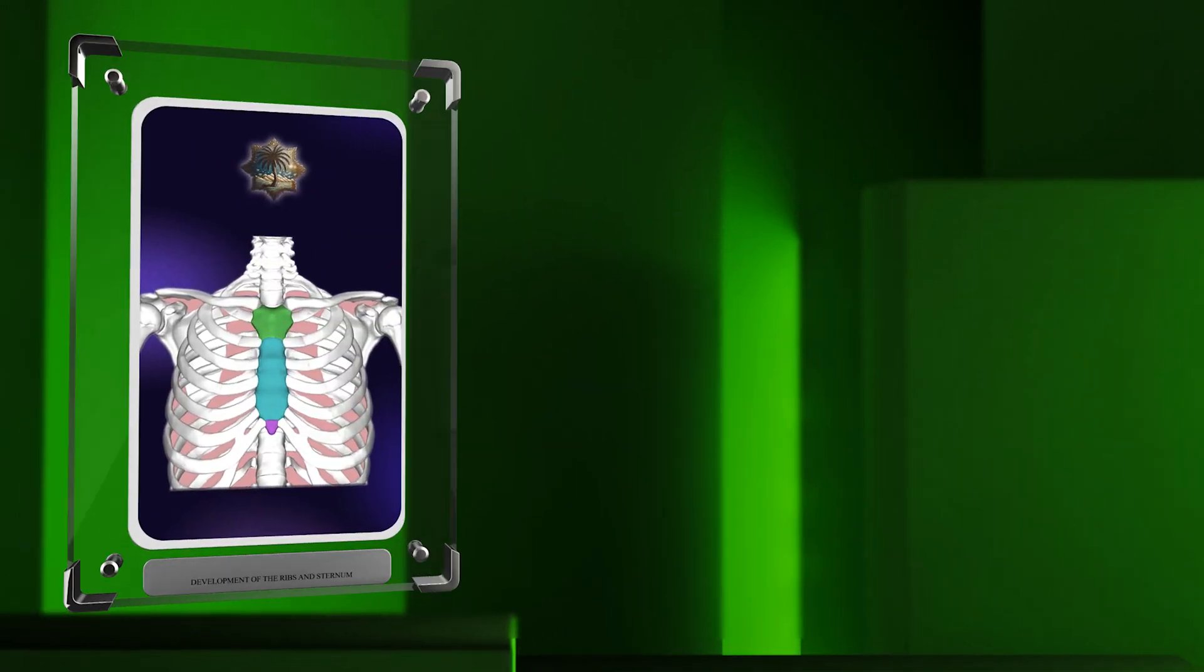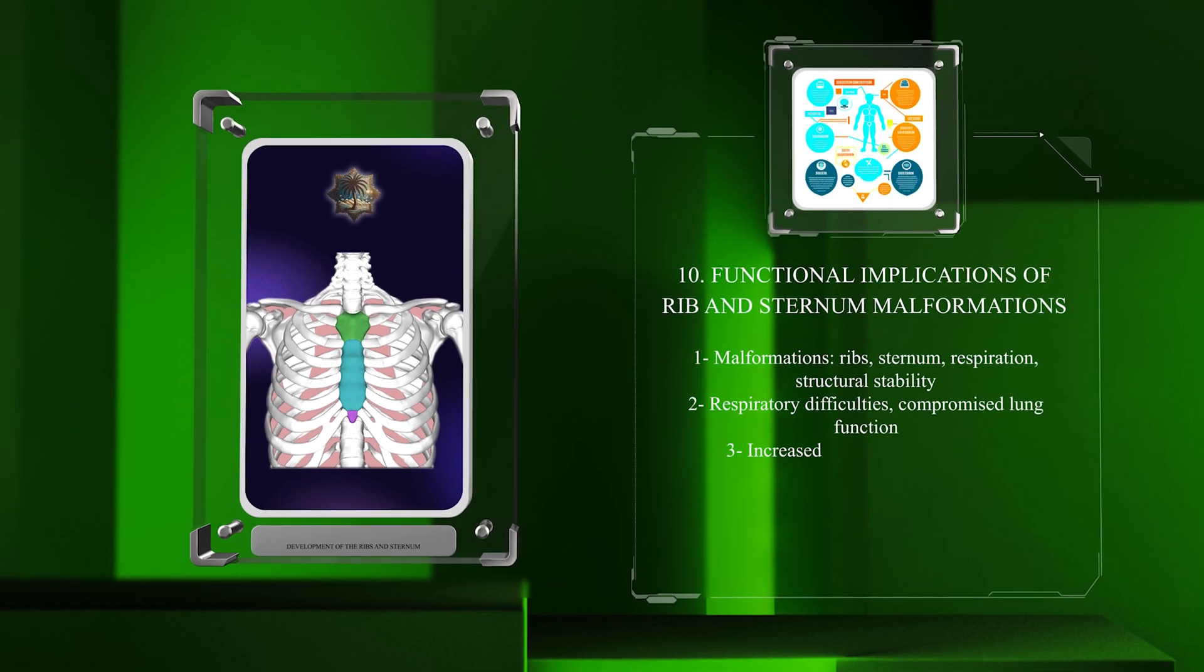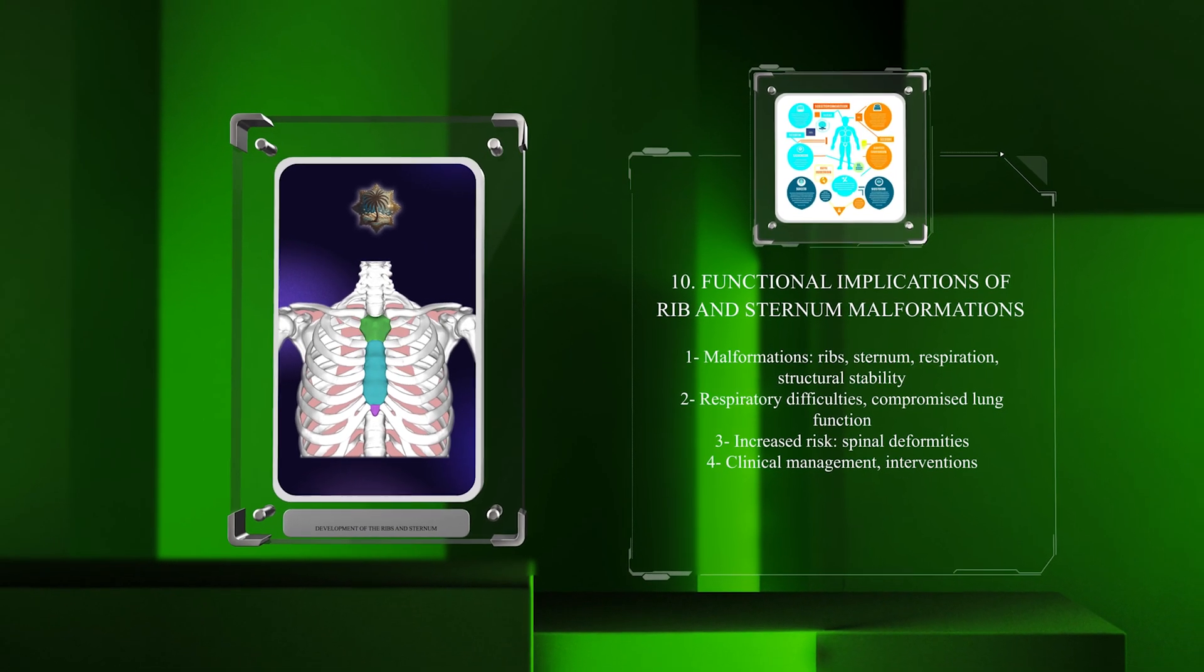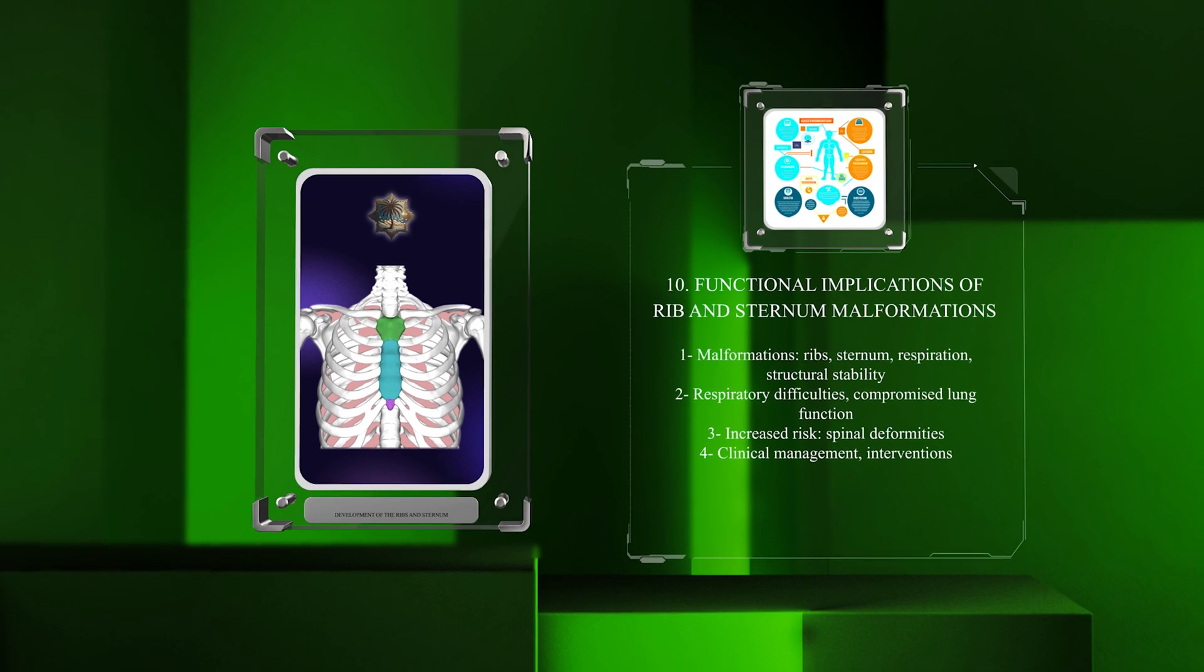Malformations of the ribs and sternum can impact respiration and structural stability. This can lead to respiratory difficulties, compromised lung function, and an increased risk of spinal deformities.